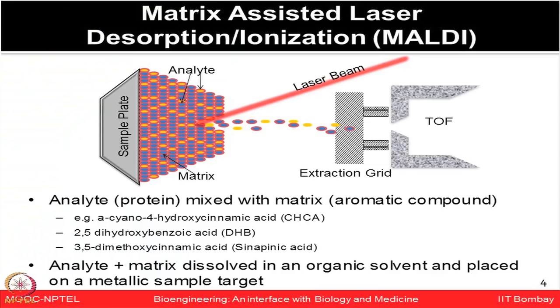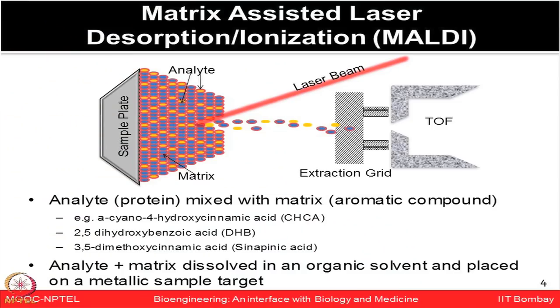In MALDI, the analyte or protein of interest is mixed with a matrix, which could be an aromatic compound such as alpha-cyano-4-hydroxycinnamic acid, 2,5-dihydroxybenzoic acid (DHB), or sinapic acid. The analyte and matrix are dissolved in organic solvents, then crystallized onto a metallic sample target plate. Laser bombardment generates ions which are then separated in a time-of-flight tube based on the mass-to-charge ratio.